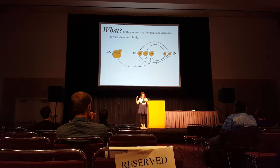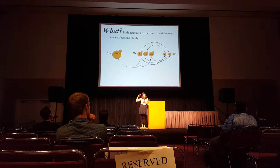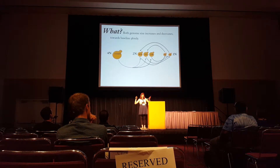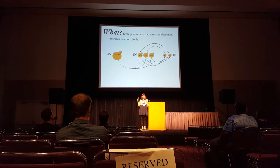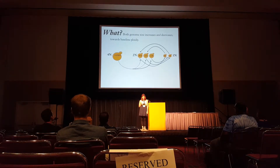We're seeing both increases and decreases in ploidy, always toward the baseline ploidy. So haploids can double up to diploids, diploids can go down to haploids, and tetraploids can go down to diploids. It seems like depending on the species, they can do all of these things.